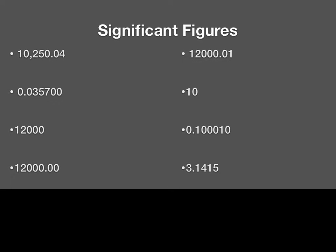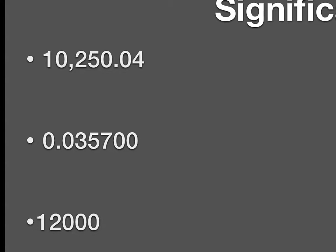Here are some examples. I'll do the first one together and then pause so you can do the rest and check your answers. For the first number, I count my counting numbers: 1, 2, 3, 4. Then my zeros: one is between two counting numbers — significant. The other two are also between counting numbers — significant. So each digit is significant: 1, 2, 3, 4, 5, 6, 7 — seven significant figures.